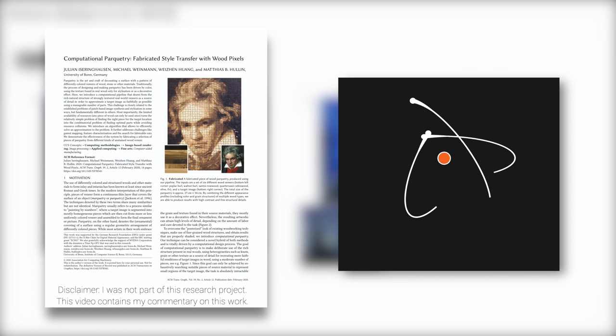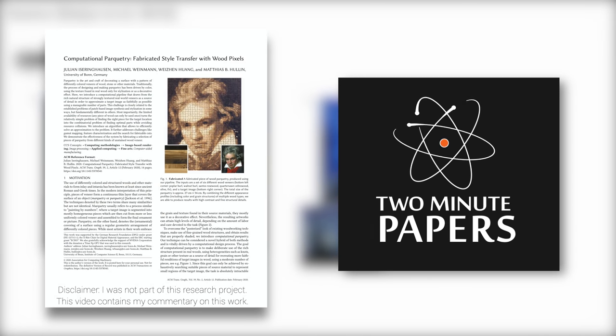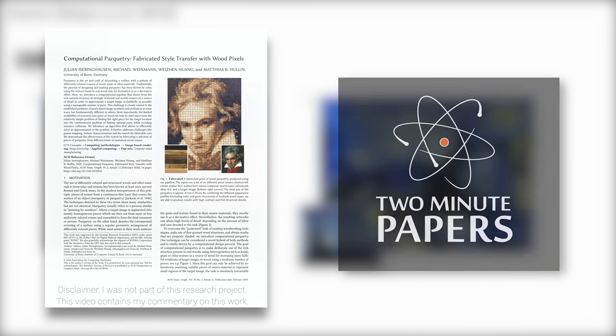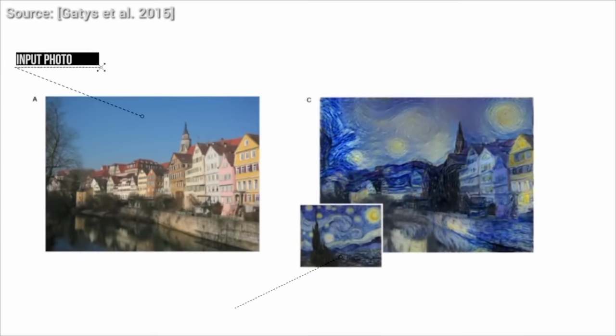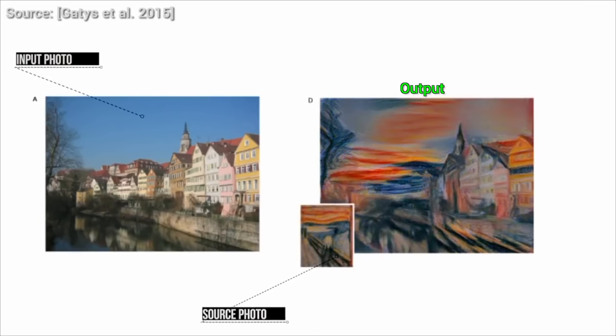Dear Fellow Scholars, this is Two Minute Papers with Dr. Károly Zsolnai-Fehér. Everybody loves style transfer. This is a task typically done with neural networks, where we have two images, one for content and one for style, and the output is the content image reimagined with this new style.